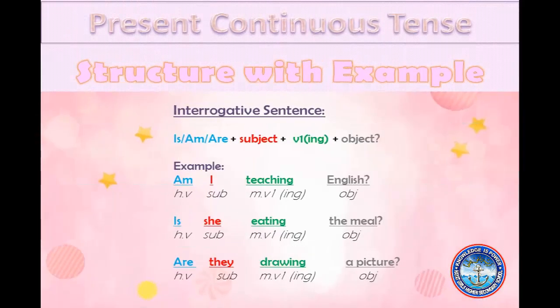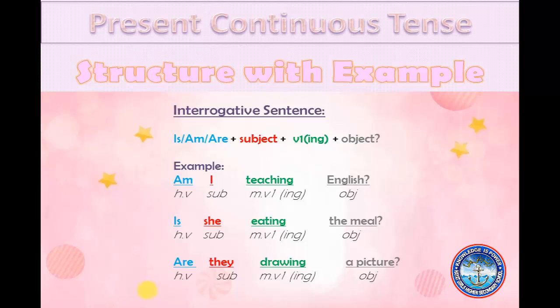Here is the structure of interrogative sentences in present continuous tense. We make two changes only: first, we change the place of the helping verb, and second, we add a question mark at the end. Examples: Am I teaching English? Is she eating the meal? Are they drawing a picture? In all these sentences, the helping verb comes at the beginning and the question mark at the end.